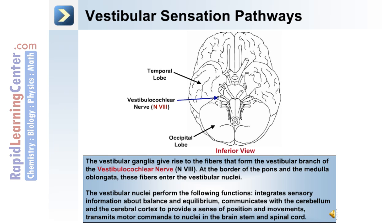The vestibular ganglia give rise to fibers that form the vestibular branch of the vestibulocochlear nerve. At the border of the pons and the medulla oblongata, these fibers enter the vestibular nuclei. The vestibular nuclei integrate sensory information about balance and equilibrium, communicate with the cerebellum and cerebral cortex to provide a sense of position and movement, and transmit motor commands to nuclei in the brain stem and spinal cord.